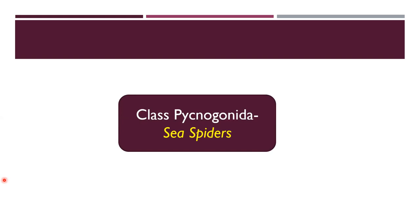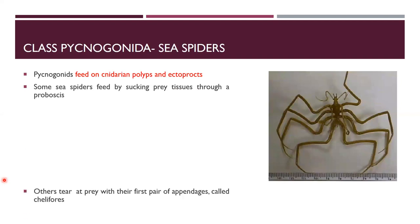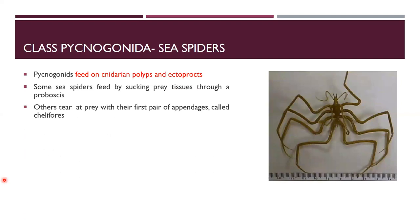Now the third class is Pycnogonida. Class Pycnogonida contains sea spiders. They prey on cnidarians and ectoprocts. Their body is reduced and they have a first pair of appendages.